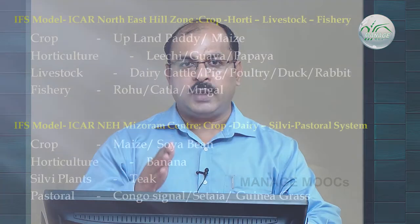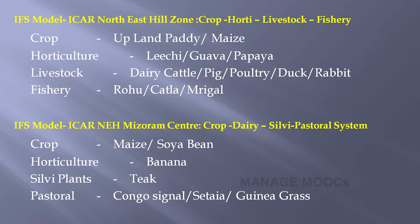Now we will see different models that ICAR organizations have recommended for the north east hill zone, combining crop, horticulture, livestock, and fishery. In crop, they recommended upland paddy or maize; in horticulture, lychee, goa, and papaya; for livestock, dairy cattle, pig, poultry, duck, or rabbit; and in fishery, three varieties — Indian common carp including rohu, katla, and mrigal.